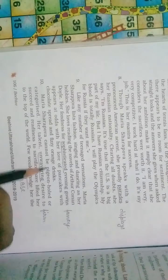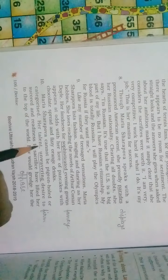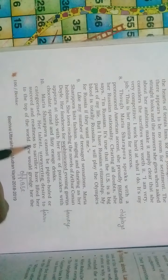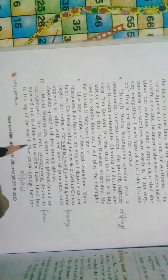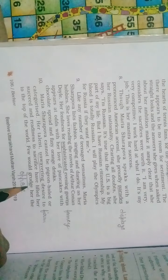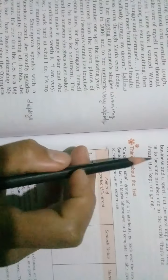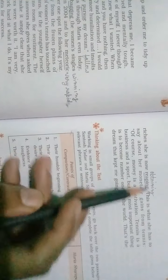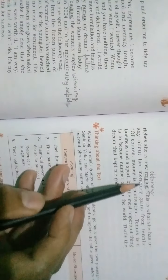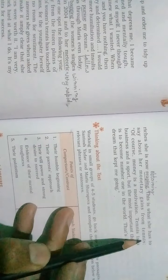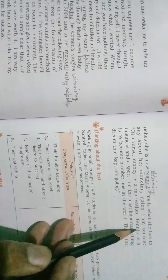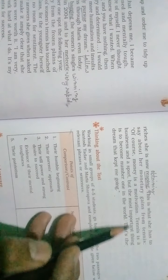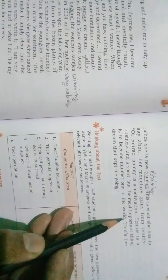Maria Sharapova cannot be pigeonholed or categorized. Her talent, unwavering desire to succeed, and readiness to sacrifice have lifted her to the top of the world. Few would grudge her the riches she is now reaping. This is what she has to say about her monetary gains from tennis. Of course, money is a motivation. Tennis is a business and a sport. But the most important thing is to become number one in the world. That's the dream that kept me going. So, here, unwavering means firm, grudge means oppose, reaping means obtained.